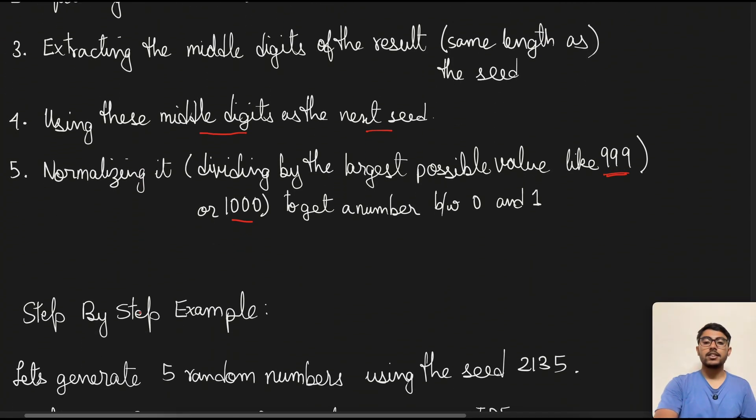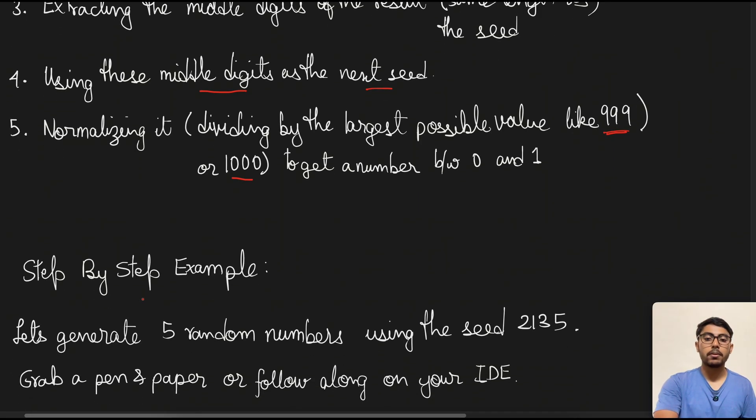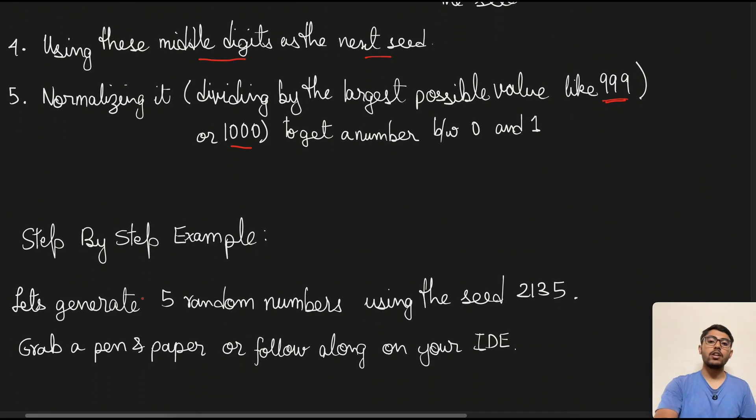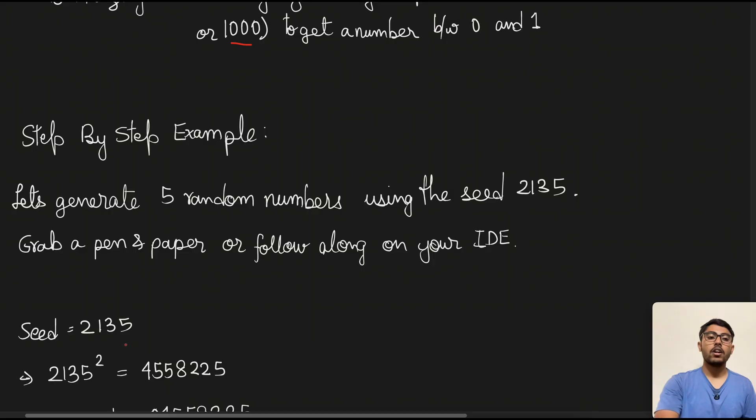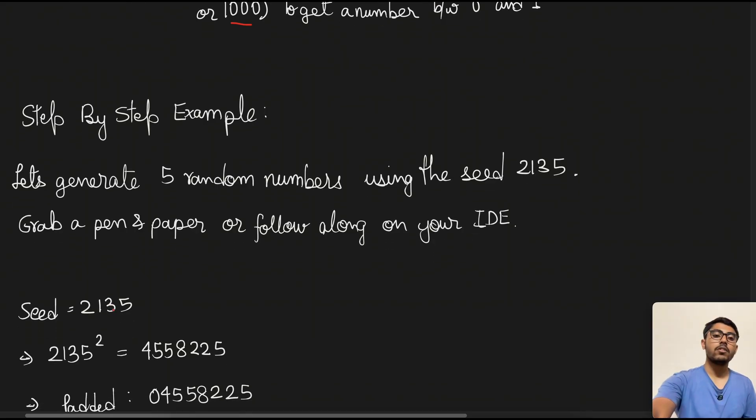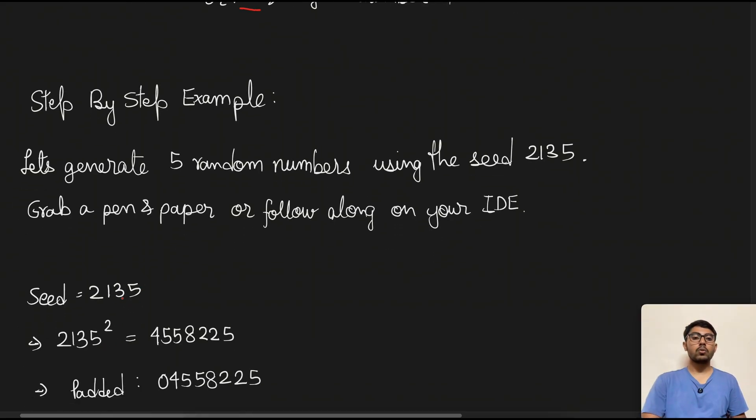So next is the step by step example to generate five random numbers. We are given the seed value of 2135. So I'll request you to grab a pen and paper or follow along with your IDE for this tutorial from here. So first the seed value which is 2135, we square that. So once we get this number, now we have to pad it because you see we have like seven digits here, but we need actually eight digits in order to scrape out the middle four, which will be absolutely in the center of the new number that we get.